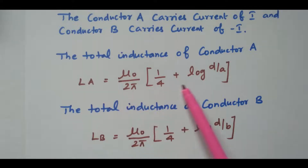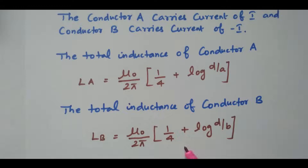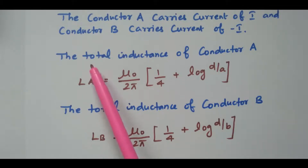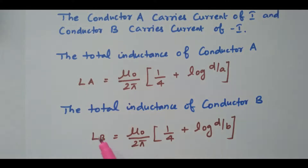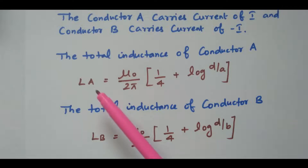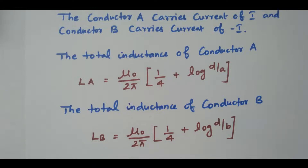Similarly, the inductance of conductor B is: LB = (µ₀/2π)(1/4 + log(D/b)), where b is the radius of conductor B and D is the distance between the conductors. Now we have the expressions for LA and LB. The total loop inductance is LA plus LB. By adding these two we get the loop inductance of the transmission line.